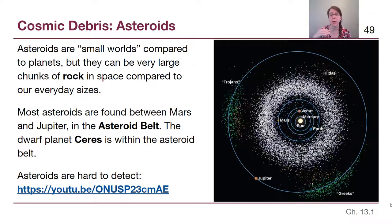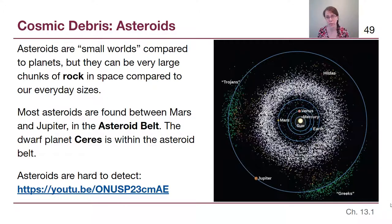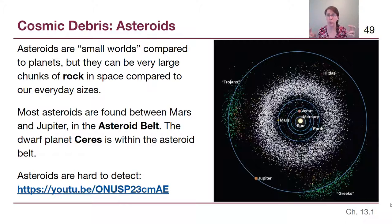We find more and more asteroids as time goes on, not because they suddenly appear, but because we now have better technology and bigger telescopes that can find smaller objects. Textbooks sometimes call asteroids 'small worlds.'